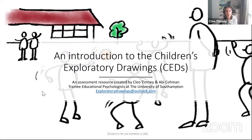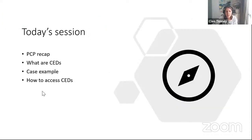Just a quick reminder that you can use the Q&A function today. If you have any questions, please pop them in there and we've got some time at the end of the session to answer as many as possible. Here is our plan for today. We expect it to take around 25 to 30 minutes, then about 5 to 10 minutes at the end for questions and discussion. We'll start by briefly recapping personal construct theory, then talk about the SEDS and how we intend for them to be used, share a short example, and guide you through how to access them.